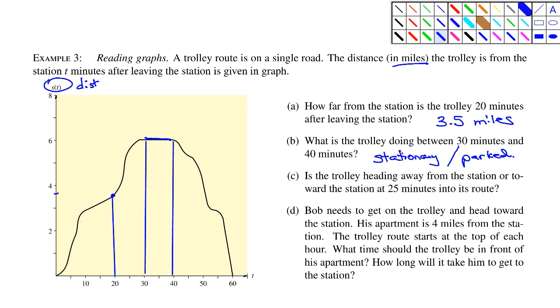Question C. Is the trolley heading away from the station or toward the station at 25 minutes into its route? All right. 25 minutes. Let's put it up to right about there. And you can see that, as I draw this in right here, you can see that the curve is increasing at that point. And so increasing on this curve means that the trolley is gaining distance away from the station, which means it is heading away from the station.